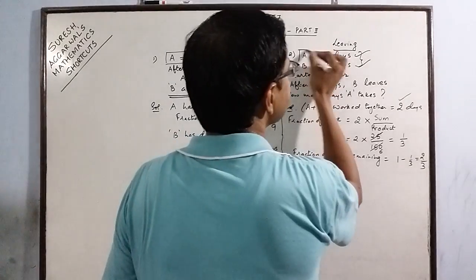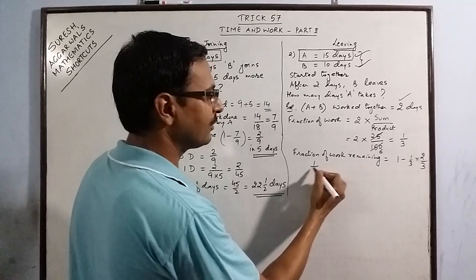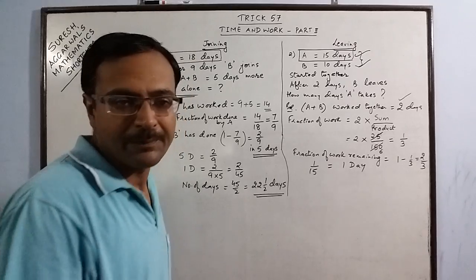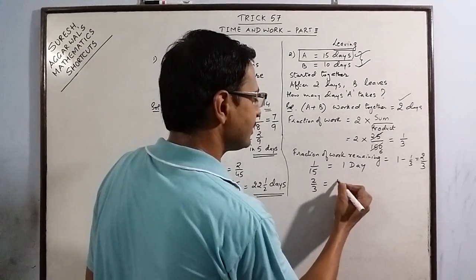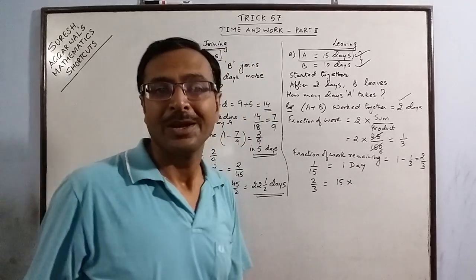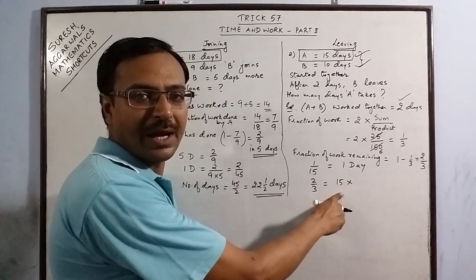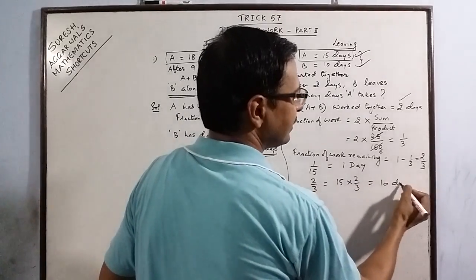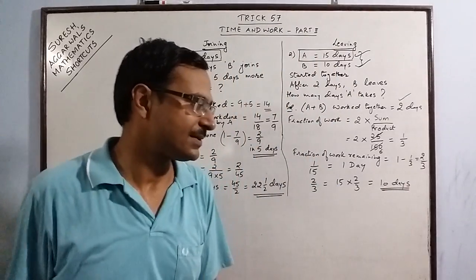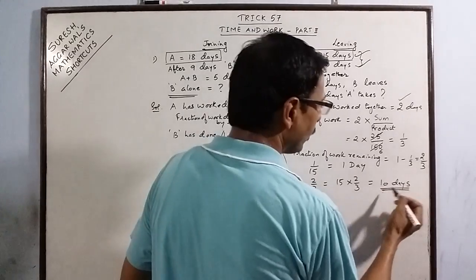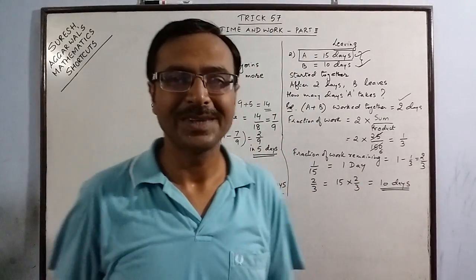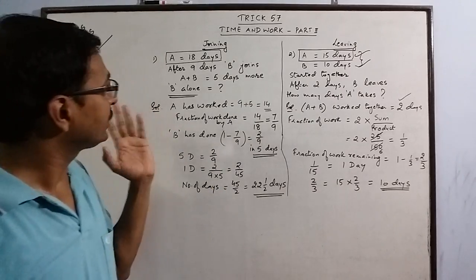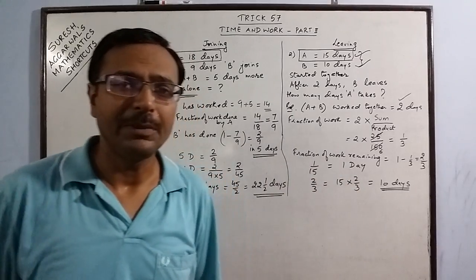A does the work alone in 15 days, so 1/15 of the work is done in one day. Two-thirds of the work is done in 15 × (2/3) = 30/3 = 10 days. So A takes 10 more days to complete the remaining work after B leaves.